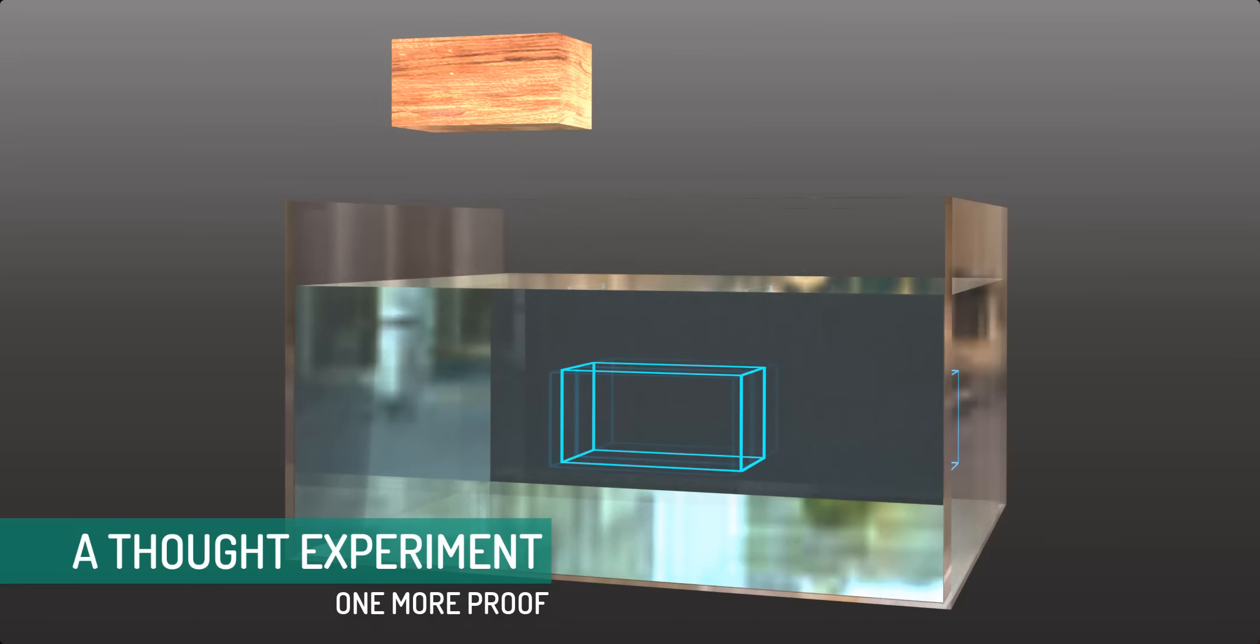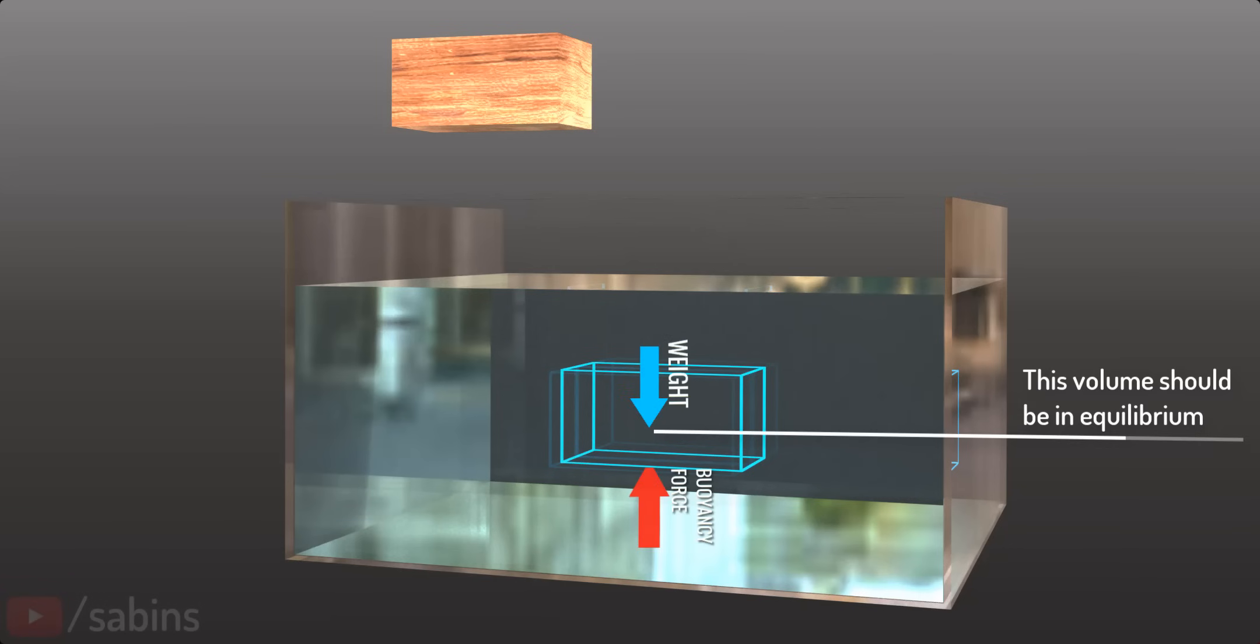The water volume inside the lines should be in equilibrium, which means the surrounding water should exert a force equal to the weight of the water inside.